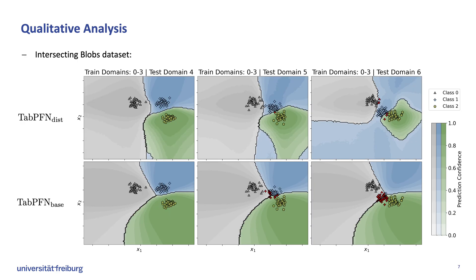Let's now compare our approach to the baseline Tab PFN qualitatively. The dataset evaluated here is the intersecting blobs dataset, in which three clusters gradually move past each other across domains. Both models get the first four domains 0 to 3 as training data and have to extrapolate the movements to domains 4 to 6. Our model in the top row clearly adjusts its decision boundary and extrapolates the shifts observed in the training dataset, resulting in much less misclassification. Also, our model decreases its prediction certainty over time, improving calibration.